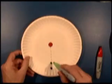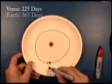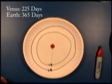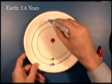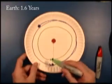Venus makes its orbit around the Sun in 225 days. Earth makes its rotation in 365 days. The next time these planets align is about 1.6 Earth years later, or 2.6 Venus years.